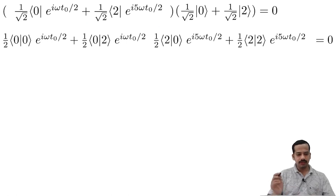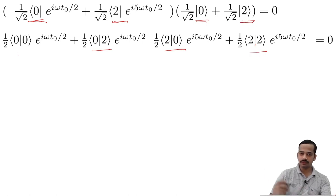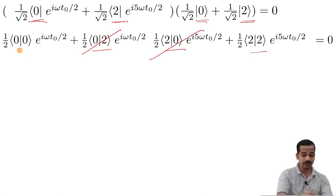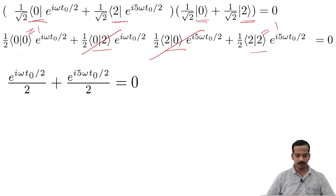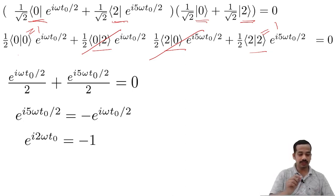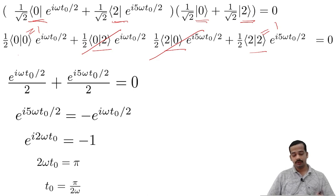Let me write the inner product. I have taken the bra vector corresponding to psi(t-0), so e to the power minus i theta becomes e to the power plus i theta. Taking the individual inner products: <0|0> and <2|2> each equal 1 because of normalization, while <0|2> and <2|0> vanish because of orthogonality. When we solve this equation and rearrange, we get e to the power i 5 omega t-0 over 2 equals e to the power minus i omega t-0 over 2. Bringing the e to the power i omega t-0 over 2 to the left, we get e to the power i 2 omega t-0 equals 1. For the minimum time, 2 omega t-0 equals 2 pi, giving t-0 equals pi over 2 omega. That means option 1 is the right answer.